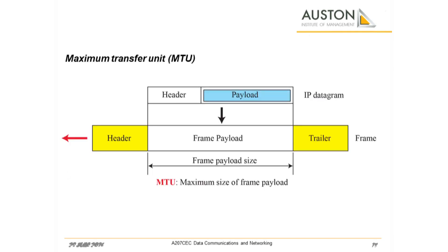The data link layer needs to pack bits into frames so that each frame is distinguishable from another. Our postal system practices a type of framing: the simple act of inserting a letter into an envelope separates one piece of information from another, and the envelope serves as the delimiter. Framing in the data link layer separates a message from one source to a destination by adding a sender address and a destination address. The destination address defines where the packet is to go, and the sender address helps the recipient acknowledge the receipt.